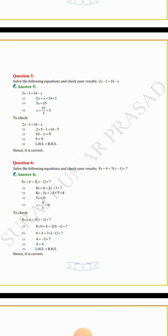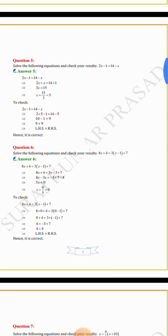To check, we keep 5 in place of x. 2 × 5 − 1 = 14 − 5 gives 10 minus 1 equals 9, so 9 equals 9. LHS equals RHS, hence it is correct.